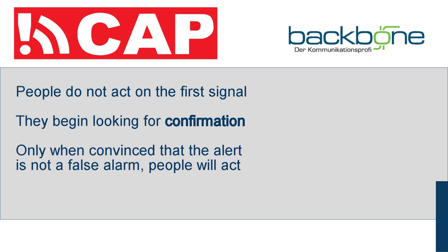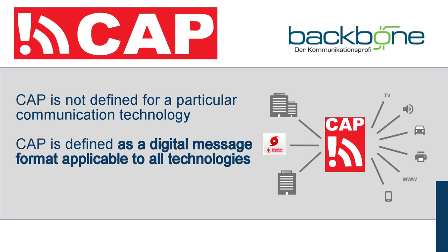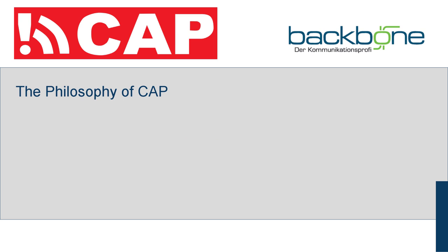CAP helps people get exact corroboration of alerts coming from multiple channels. Rather than being defined for a particular communication technology, CAP defines a digital message format applicable to all technologies. So, what does the philosophy of the standard say? First and foremost, the CAP alert message should provide a means for interoperable exchange of alerts and notifications among all kinds of emergency information systems.